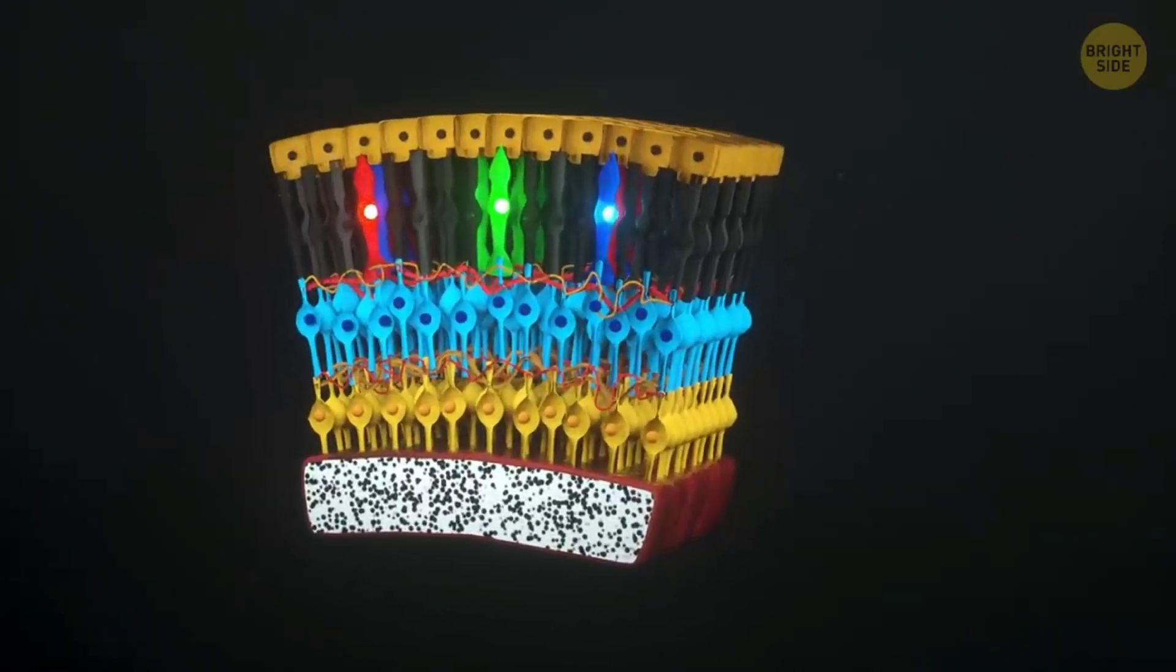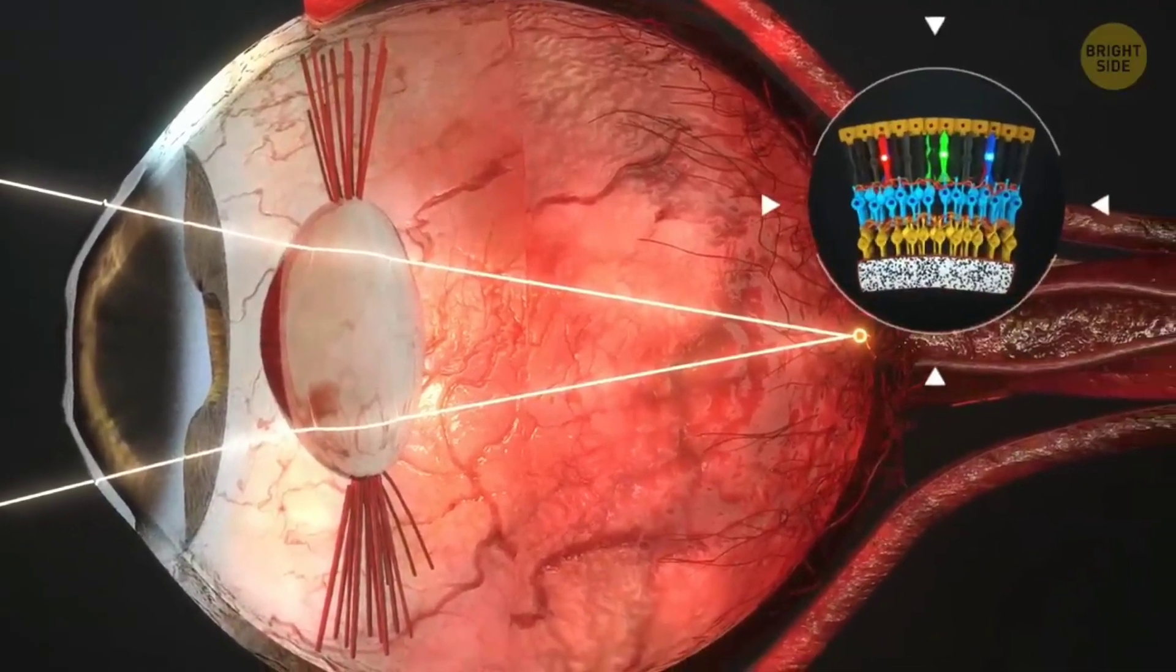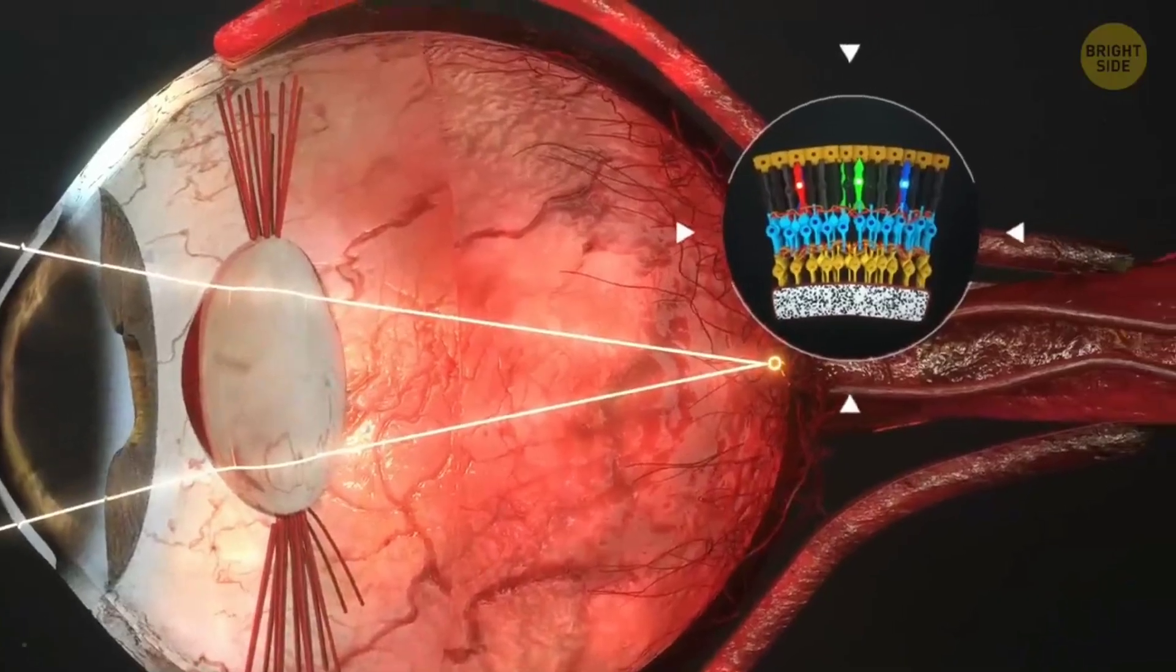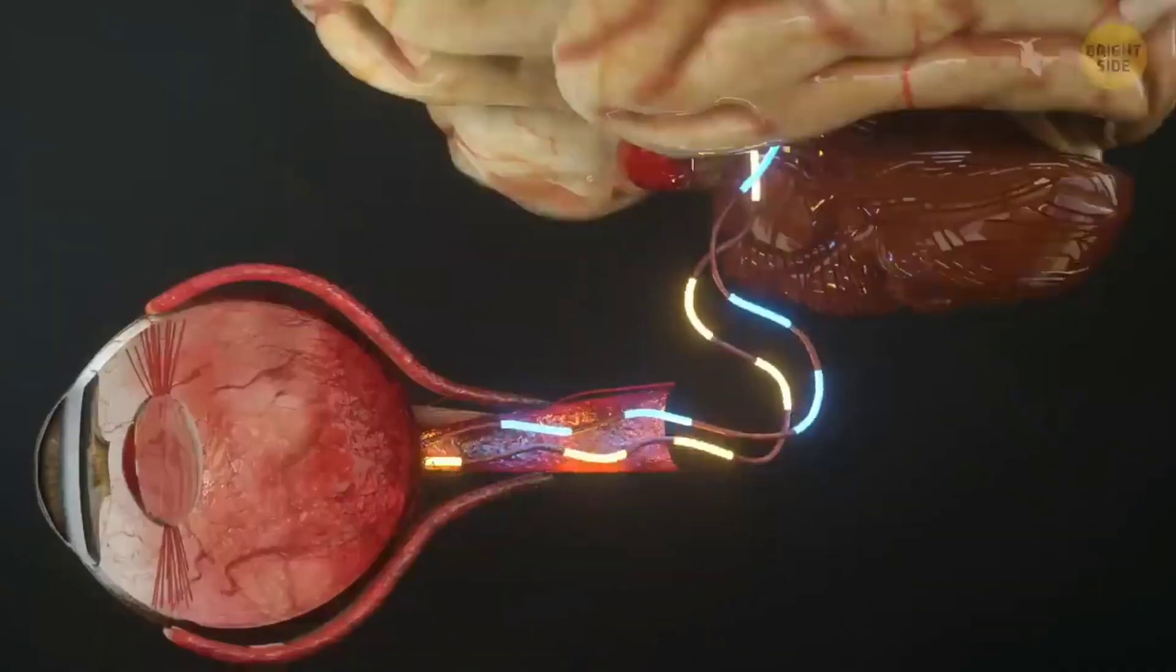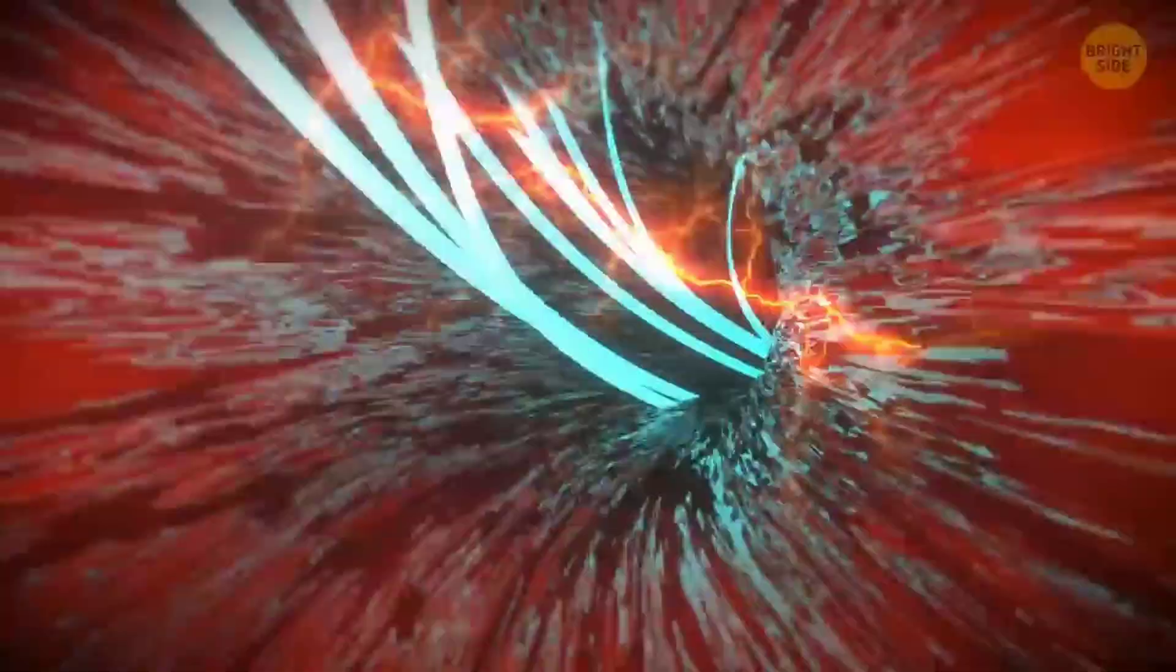All of the photodetector cells that detect the light around you are located on your retinas, on the back of your eyes, but there's a little spot in each retina where it connects to your optic nerve, which is what takes the electrical signals from these cells to your brain so you can make sense of what your eyes are seeing.